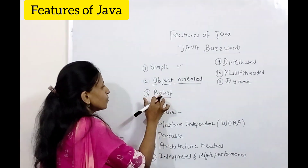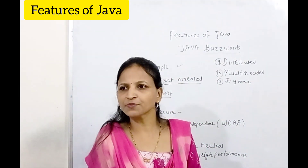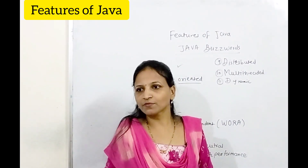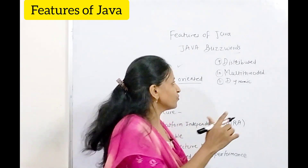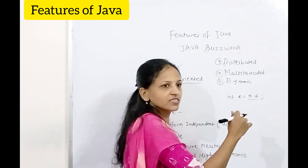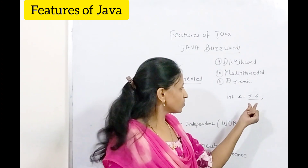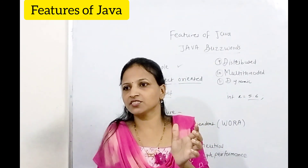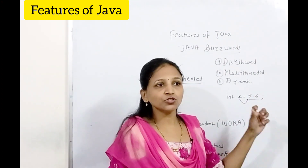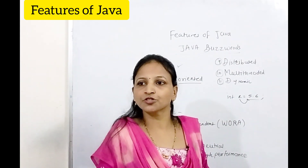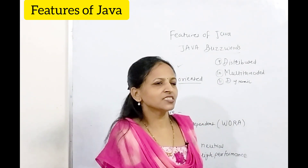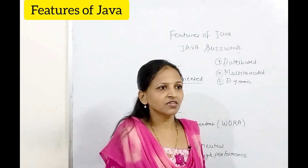The next feature is robust. Robust means strong type checking is there. Strong type checking means everything you use in a Java program must be declared first before you can use it. If you have an integer variable x and you assign a floating point value like 5.6, which is actually a double, that is not allowed in Java because type compatibility is always considered — the data types must be the same.